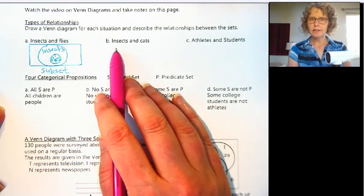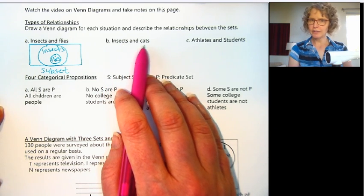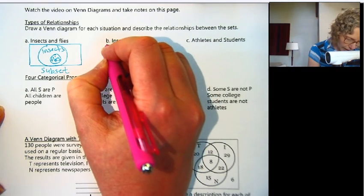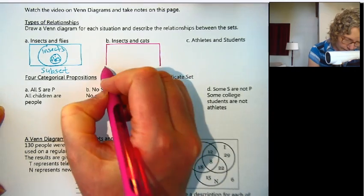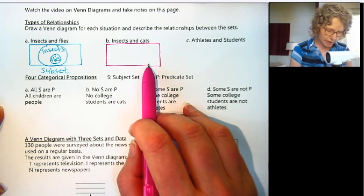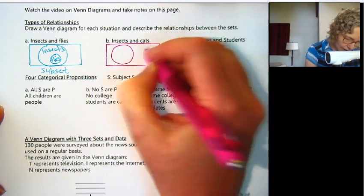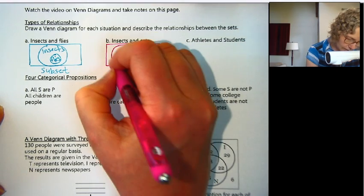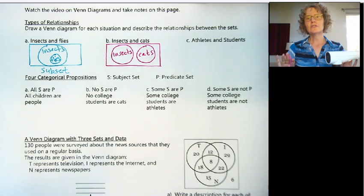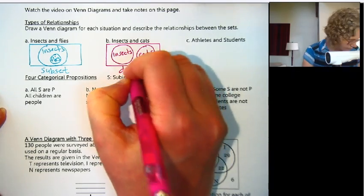The second relationship we'll look at is between insects and cats. Insects and cats don't have much to do with each other — there aren't any insects that are cats or cats that are insects. So let's draw our box again. The box is very important because it represents everything that's possible. Insects and cats don't have anything in common, so we draw those as two separate sets. These are called disjoint — they don't have any overlap.